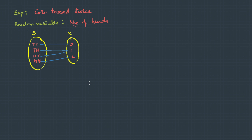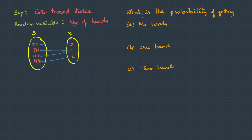Let's start with discrete. Let's take the same example used in the previous lecture. The experiment was coin toss twice, and the random variable was the number of heads. Here is the sample space: tail-tail, tail-head, head-tail, and head-head. Number of heads for tail-tail is 0, here we have 1, and here we have 2. Random variables basically give you an overall picture — we map the sample space with some numbers, and this can be used to find the probabilities.